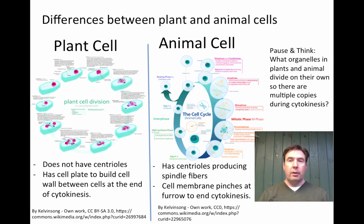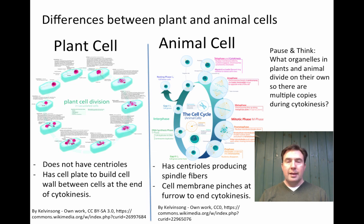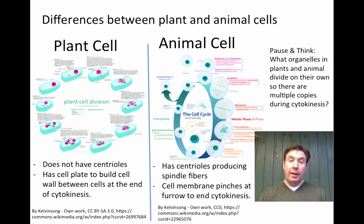In animal cells, centrioles produce the spindle fibers, and the cell membrane pinches inward at a cleavage furrow to complete cytokinesis — the pinching off forms the division between the two cells. The organelles that divide on their own are the mitochondria in animal cells, and both mitochondria and chloroplasts in plant cells. This is part of the evidence for endosymbiotic theory: both chloroplasts and mitochondria divide by a process resembling binary fission, similar to bacterial cells, and must have enough copies present so each daughter cell receives sufficient organelles.